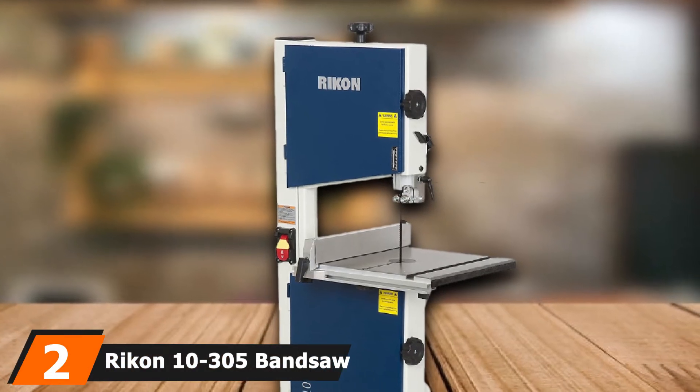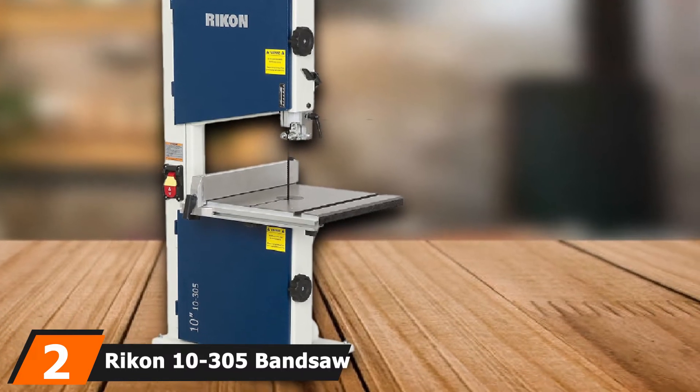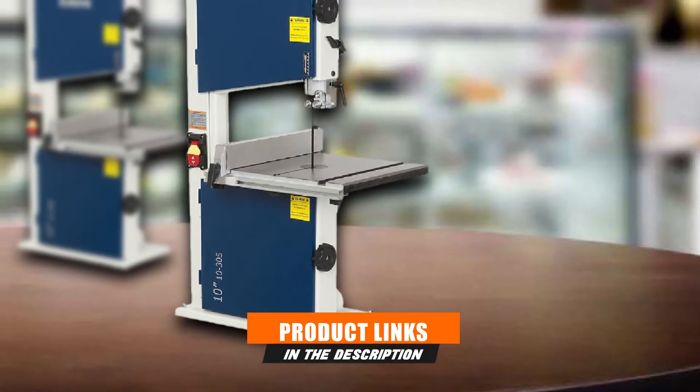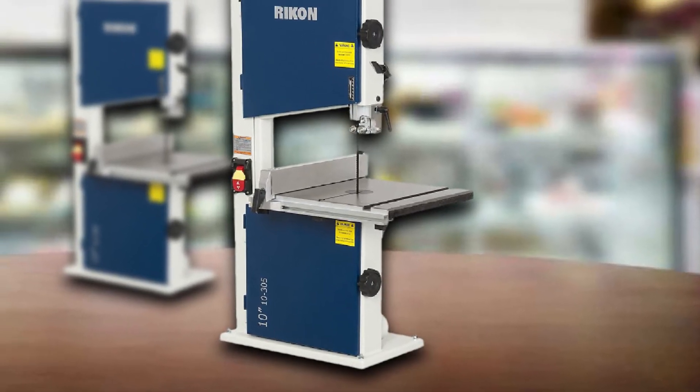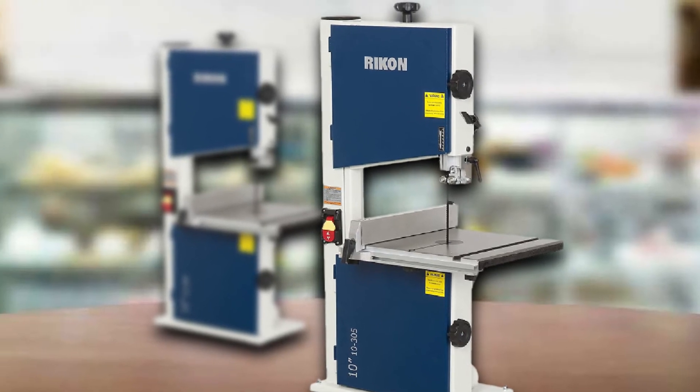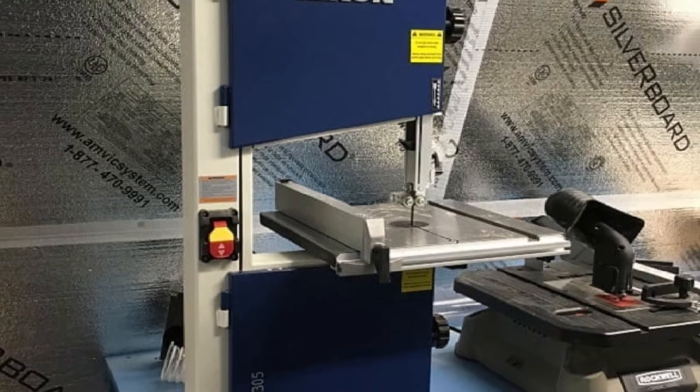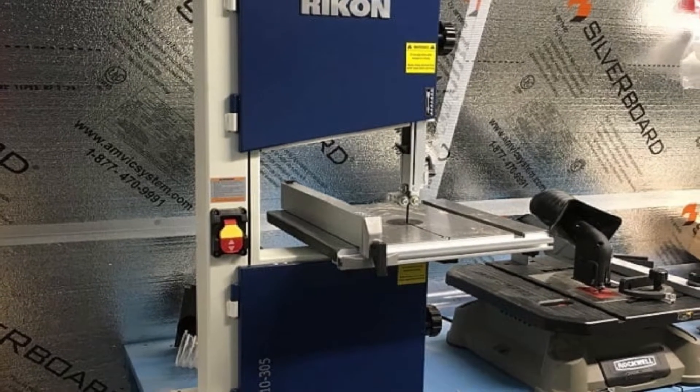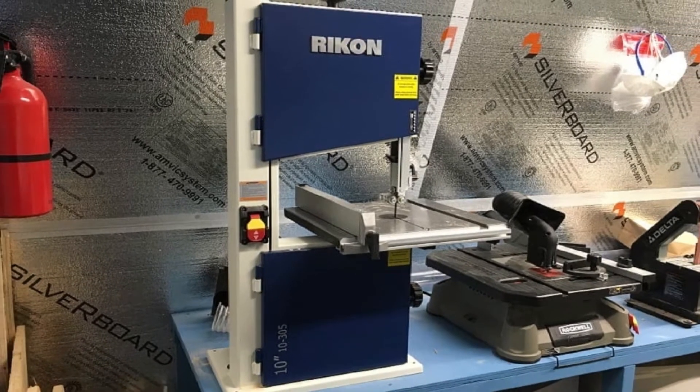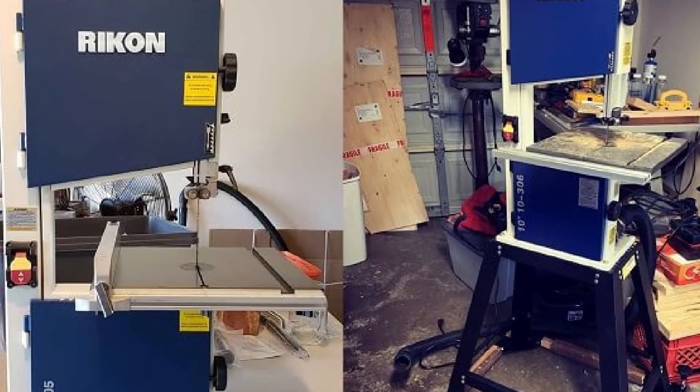Moving on to the next, at number 2 we have Rikon 10-305 bandsaw. Rikon 10-305 is a 10-inch bandsaw that comes with a solid steel design that provides you with the stability to handle the toughest woodworking tasks. It has a rip fence that you can remove for freehand jobs. Its cast iron table is smooth and sturdy, hence provides the best working surfaces you can ask for in your woodworking tasks. In case you need the best bandsaw to help handle your light to moderate woodworking tasks, then this is the product that you should buy. In this tool you get a compact and portable machine.